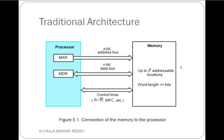Let us look at the traditional architecture of the basic interaction between the processor and main memory. In the processor, we have many circuits like program counter, MAR, MDR, instruction register, ALU, and general-purpose registers. We are going to focus on MAR and MDR — these are the two registers which connect to external memory, that is main memory. All other processor components communicate internally within the processor itself.